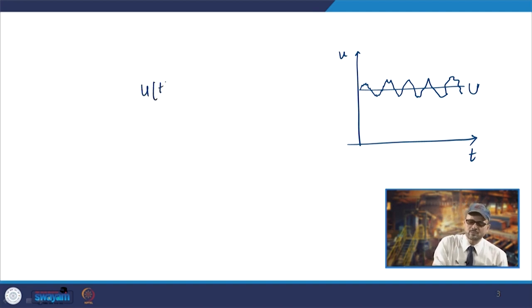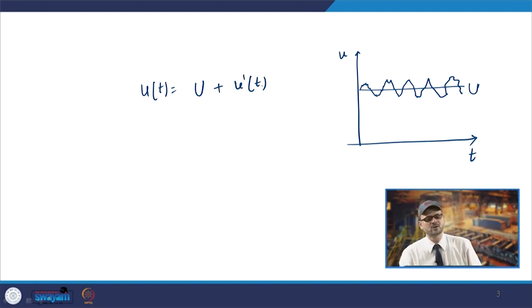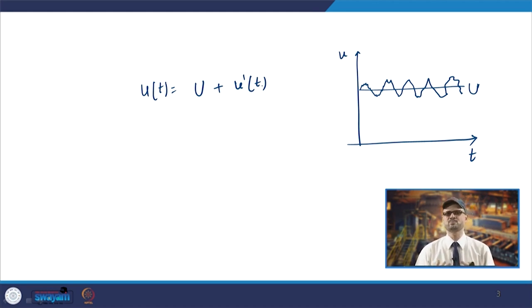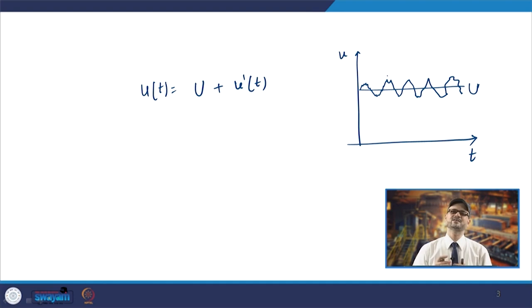At any time, u(t) = ū (the mean component) + u'(t) (the fluctuating component). That way, in turbulence the flow is characterized by a mean value and a fluctuating component. This variance applies to all properties like u, v, w, or p. Many statistical descriptors will be used when we study turbulent flow.